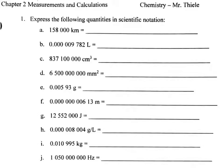Okay, so the first one we have here is 158,000 kilometers. So the basic idea is that when you have a number that is a large number, a number that's much greater than 1, you are going to take where your decimal point would be, and you're going to move it to the left until you get to the point where there's only one non-zero digit to the left of the decimal point. And however many spaces you move it,